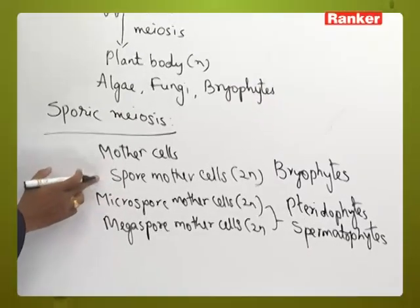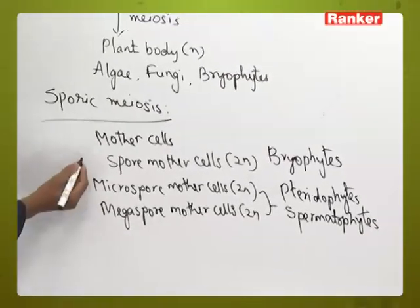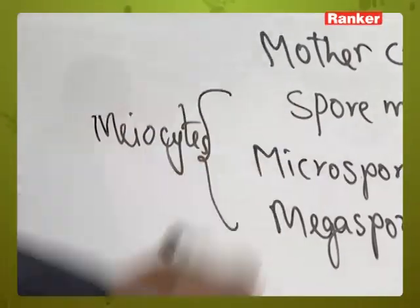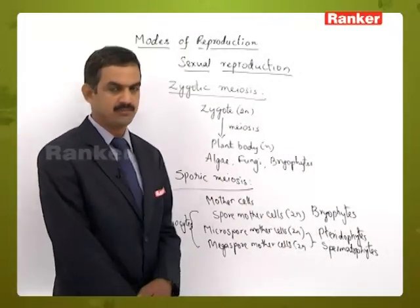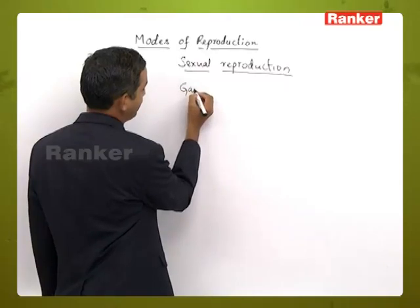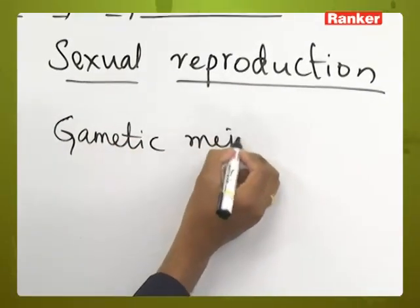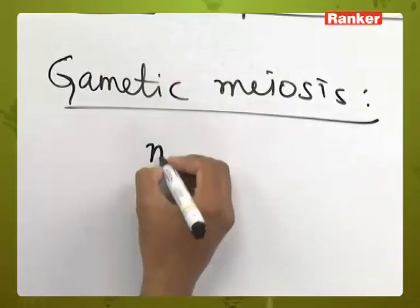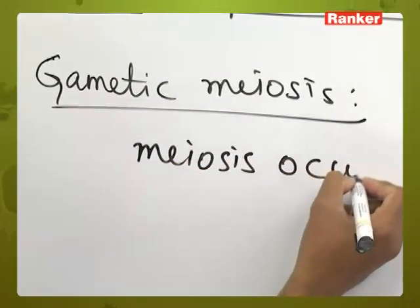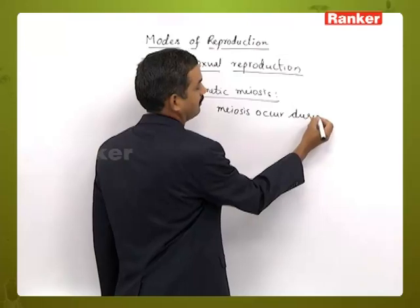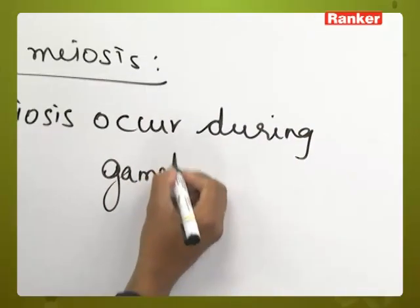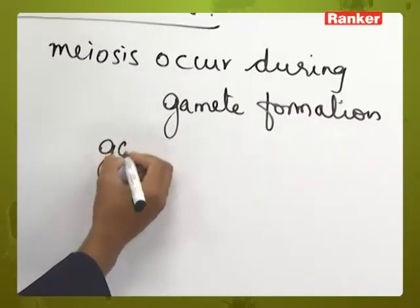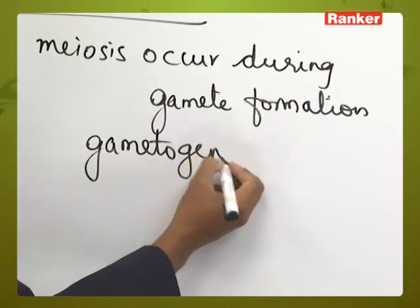In sporic meiosis, the spore mother cell, microspore mother cell, and megaspore mother cell are all undergoing meiosis, so we call them meiocytes. The resultant cells are called meiospores. The third one is gametic meiosis. Gametic meiosis is observed in animals where meiosis occurs during gamete formation, that is, during gametogenesis.